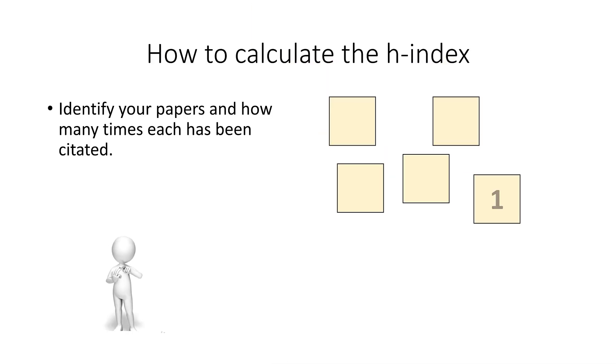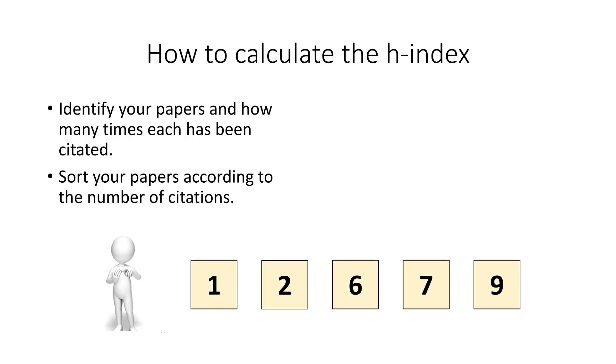So, you identify your papers and how many times each has been cited. Then, you sort your papers according to the number of citations. In this example, we have five papers, and H can never be higher than the total number of papers, thus, not higher than five.